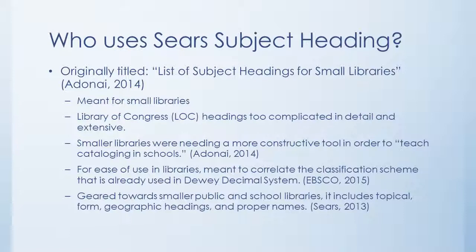In its infancy, Sears' subject heading was originally titled List of Subject Headings for Small Libraries. The initial plan was meant for smaller libraries, as the Library of Congress headings were too complicated and far too extensive for smaller facilities, yet attempted to remain as close as possible to the LOC use of headings. This gave smaller libraries a better tool to use in order to teach cataloging in schools. These libraries gave Sears the chance to correlate its classification scheme to the very familiar Dewey Decimal System. By gearing this system to small public and school libraries, topical, form, geographic, and proper name headings were much more simplistic over the LOC subject headings.